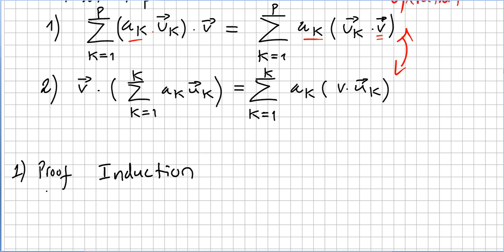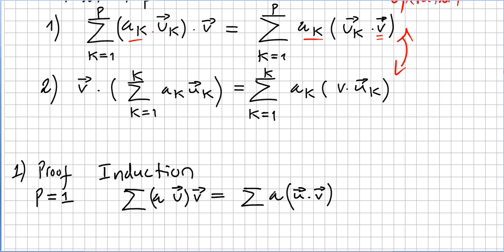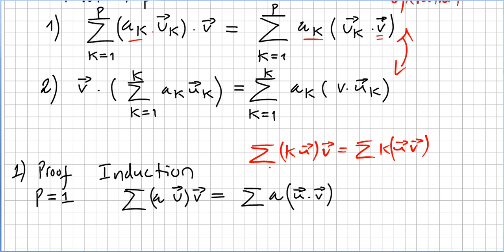So let us check this for p equals 1. Please check the previous video — we already saw this when we showed that the sum of k·u times v equals the sum of a·u times v. So for p equals 1, this is proved.